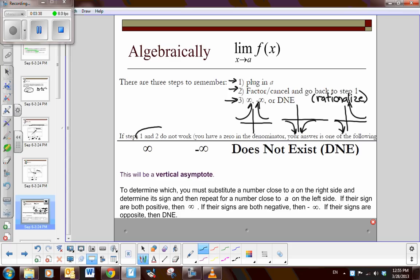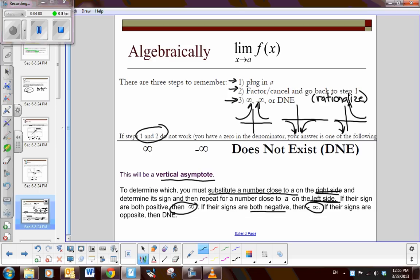Okay? So if steps 1 and 2 don't work, then you're going to have a 0 in denominator, which will result in a vertical asymptote. Now if you remember, how do I decide if it's going to be a positive infinity or negative infinity? Well, you select a number close to the constant on the right side and on the left side. And you find its sign. If they both are positive, then it's going to be infinity. If their signs are both negative, then it's negative infinity. If their signs are opposite, then it does not exist. Is this all coming back to you now? I hope so.